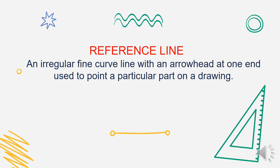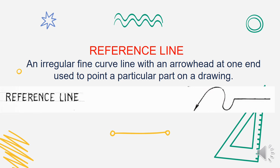Next is the reference line. It is an irregular fine curve line with an arrowhead at one end, used to point to a particular part on a drawing. It is almost similar to the leader line — the difference is that the reference line has an irregular fine curve line.